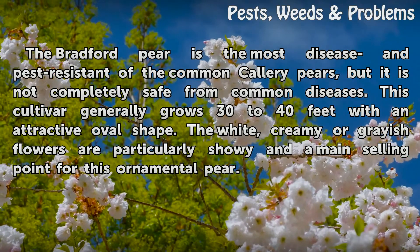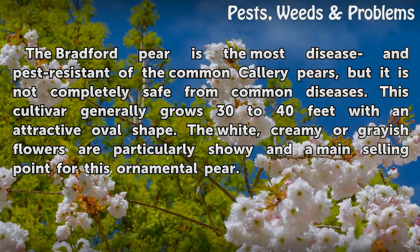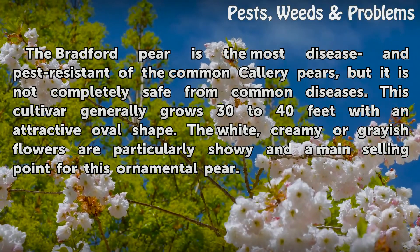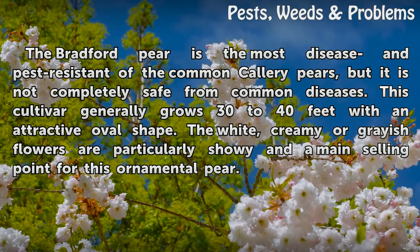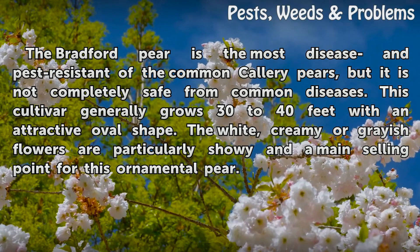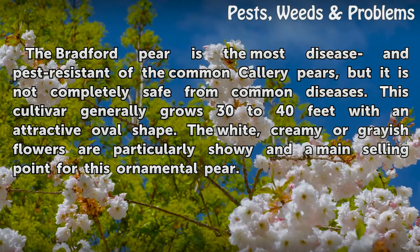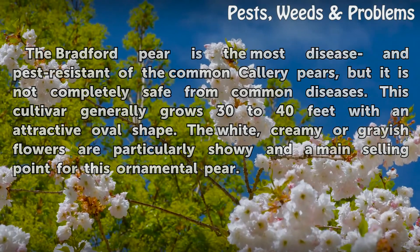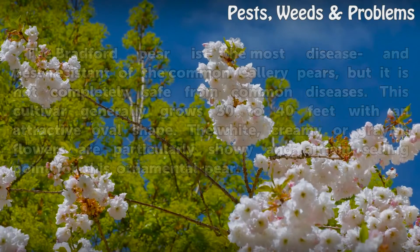This cultivar generally grows 30 to 40 feet with an attractive oval shape. The white, creamy or grayish flowers are particularly showy and a main selling point for this ornamental pear.